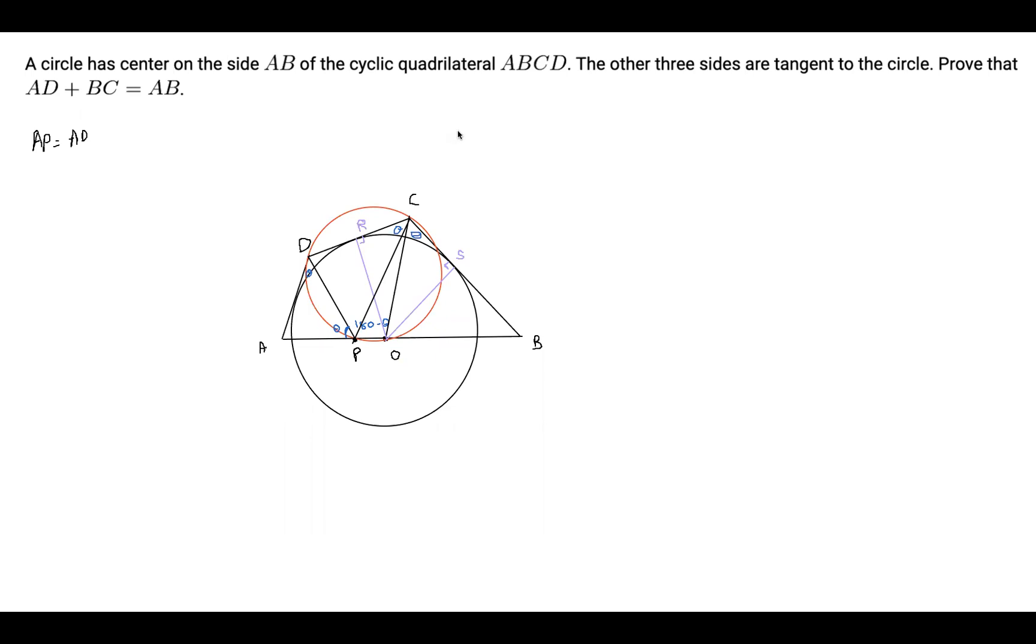And I am going to use a different color. I will call this angle over here alpha. And now I will draw OD. And since this angle over here is alpha, this angle over here is also alpha, because both of them subtend the same arc CO. So this angle is alpha. And now we're going to use symmetric logic to show that angle ADO is also alpha.